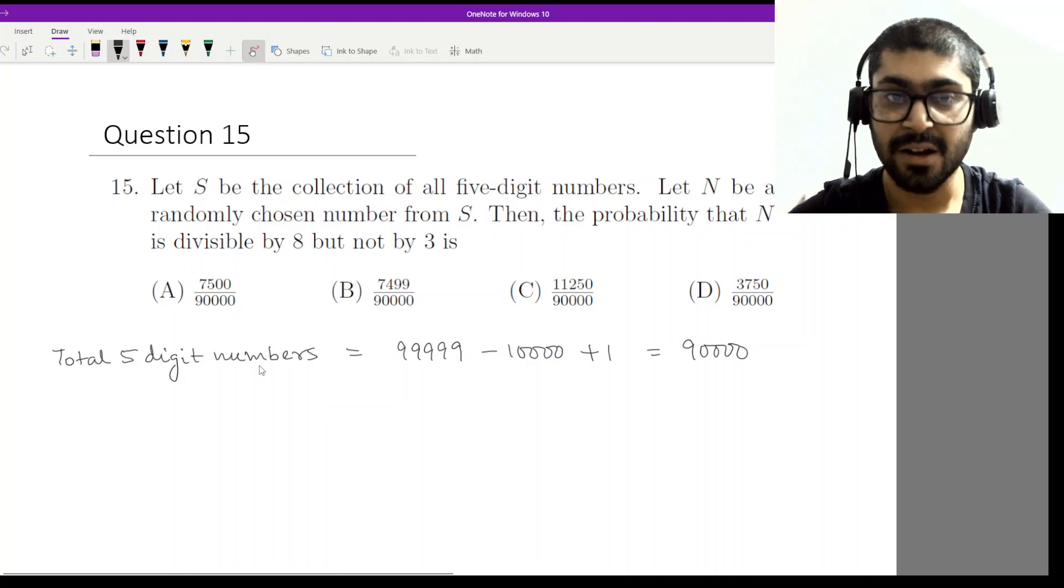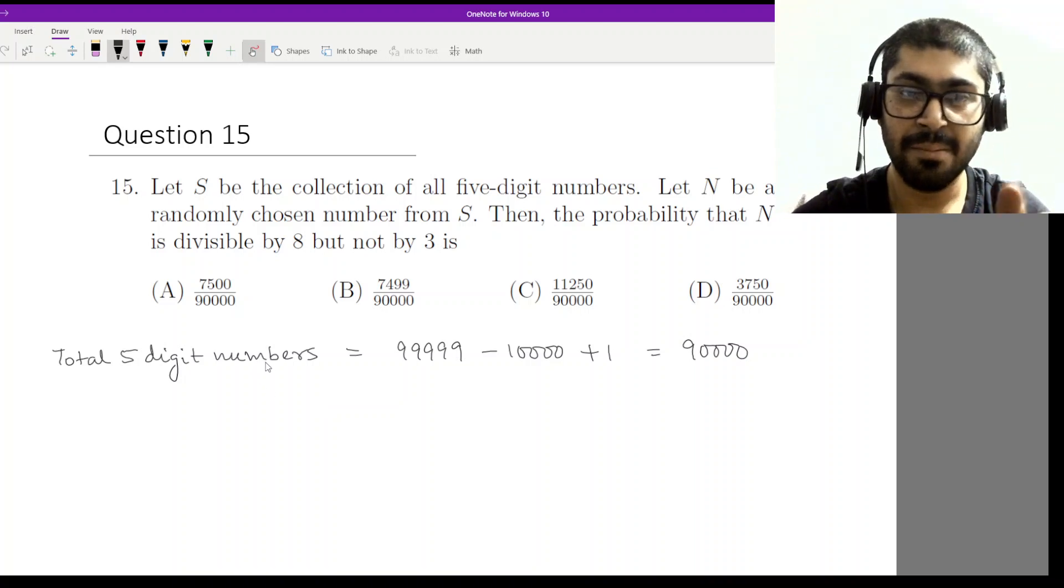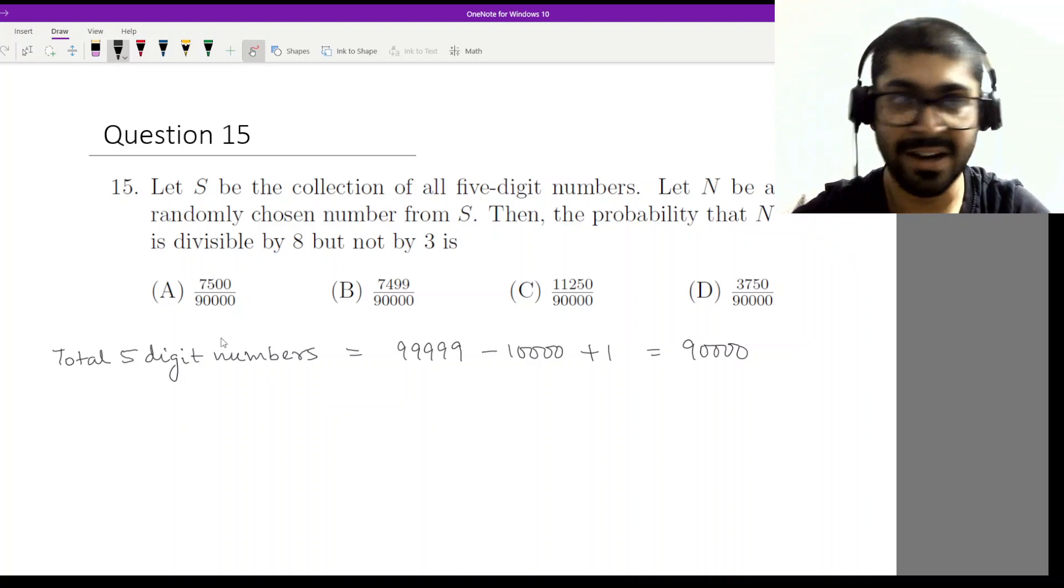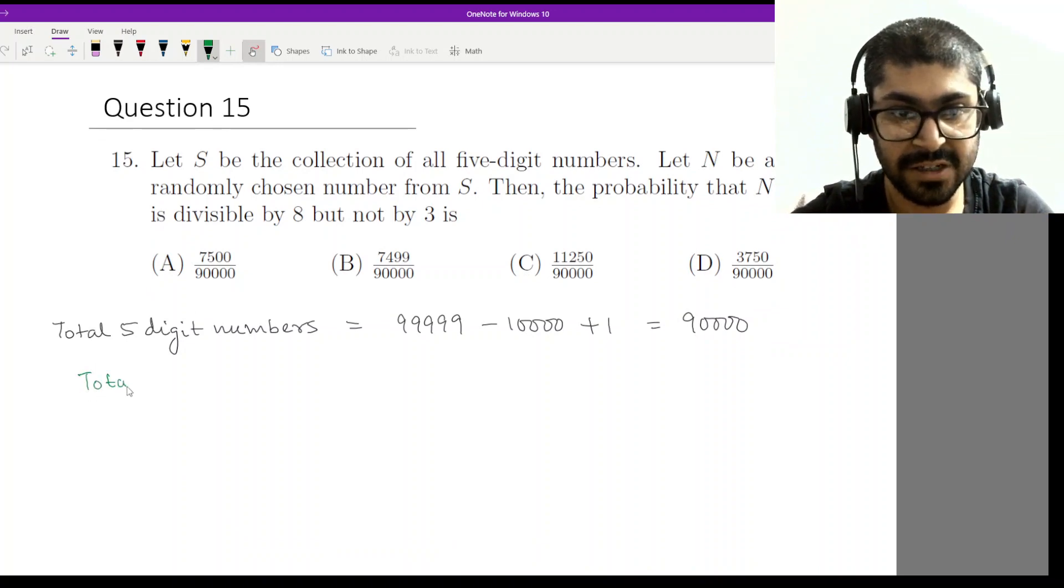Now we move on to the next part. The number has to be divisible by 8 but not by 3. How will we do this? Let us first calculate how many numbers are there that are divisible by 8.